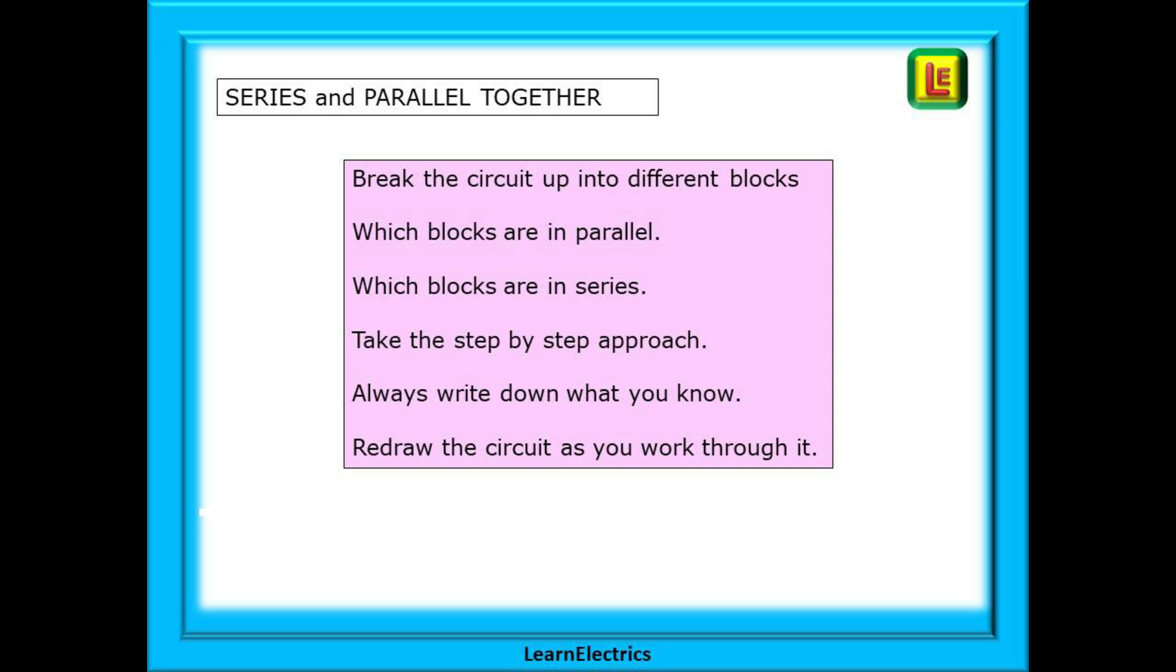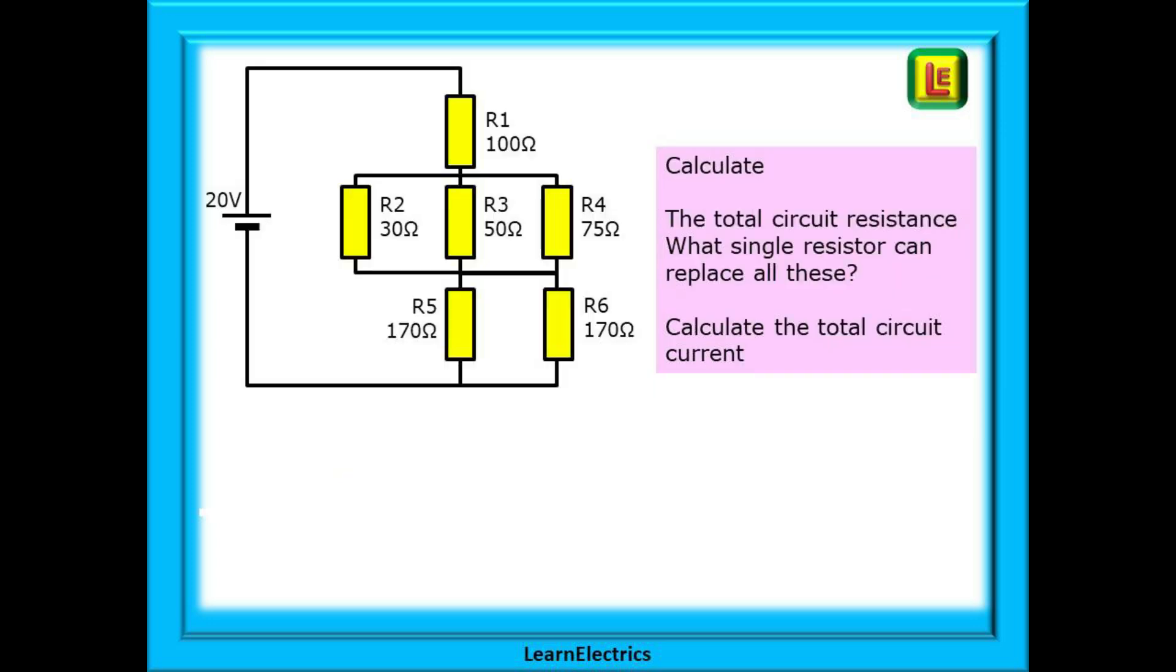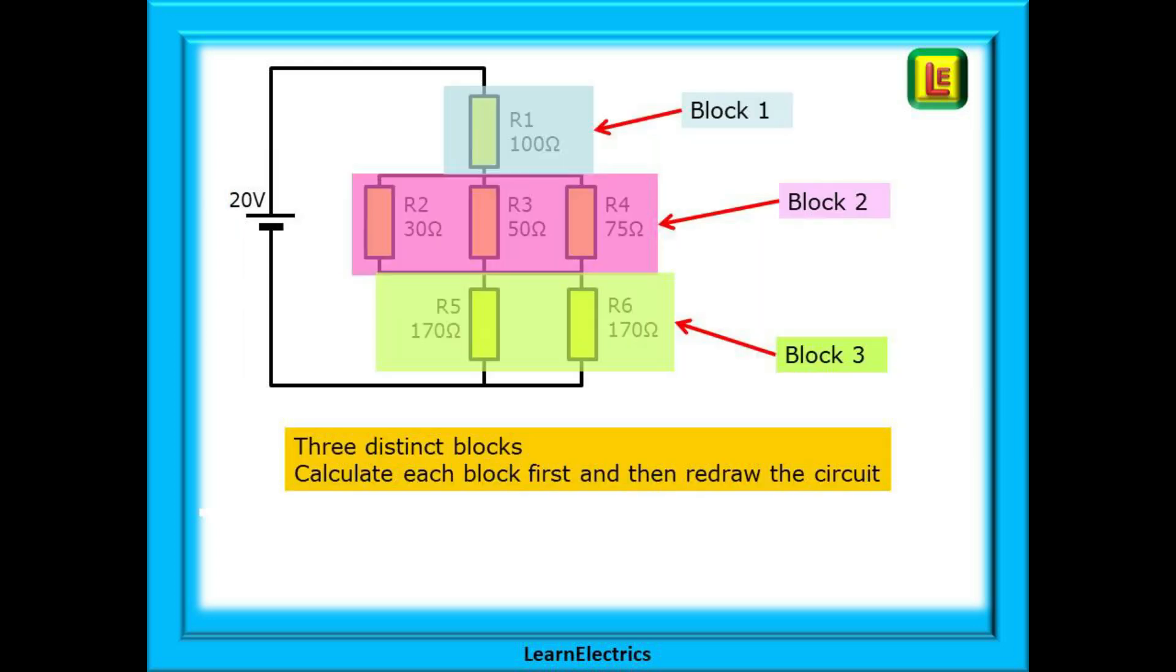Redraw the circuit as you work through it, simplifying at each stage. We are asked to calculate the total circuit resistance—in other words, what single resistor can replace all these resistors. And when we know that, we are required to calculate the total circuit current. Let's do this in stages.